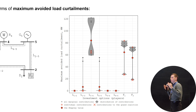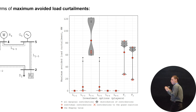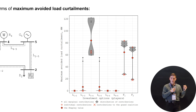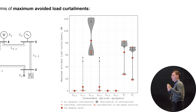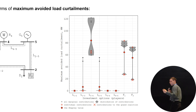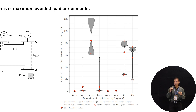Now that I've explained this, we realized that in this particular case, investment in line 1-4 is the best option — it brings the most contributions to avoided load curtailment. Speaking to a system planner, we can explain why we should prioritize this line.